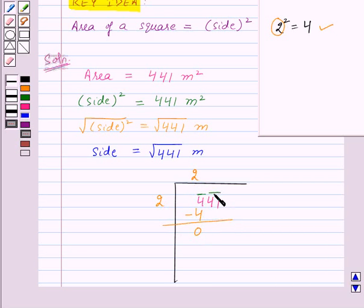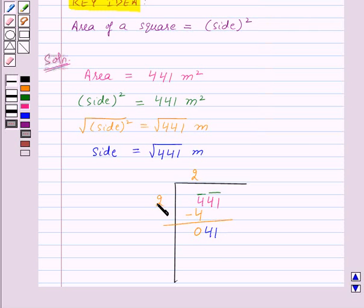Now, bring down the number under the next bar, that is 41, to the right of the remainder and get the new dividend as 41. Double the divisor, 2 plus 2 is 4, and enter it with a blank on its right. We need to find the largest possible digit to fill in the blank which will also become the new digit in the quotient such that when the new divisor is multiplied to the new quotient, the product is less than or equal to the new dividend, 41.